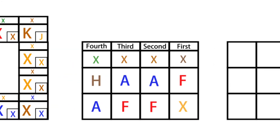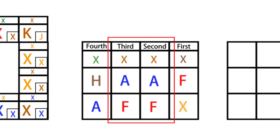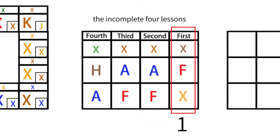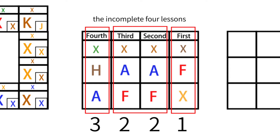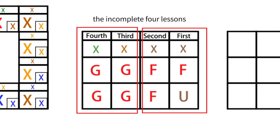In Dliu Ren, we sometimes encounter four lessons where two lessons are repeated, and sometimes even four lessons are repeated. For example, in one course the second and third lessons are the same, so this kind of four lessons is the incomplete four lessons. We regard it as only three lessons. In another case, the first and second lessons are the same, and the third and fourth lessons are also the same, so we regard it as only two lessons.